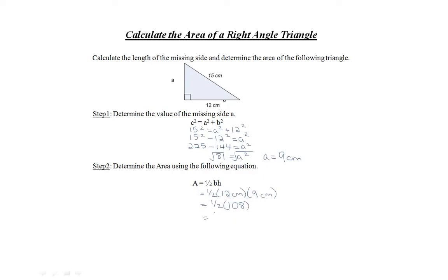1 times 108 is 108 divided by 2, which equals 54 centimeters squared.